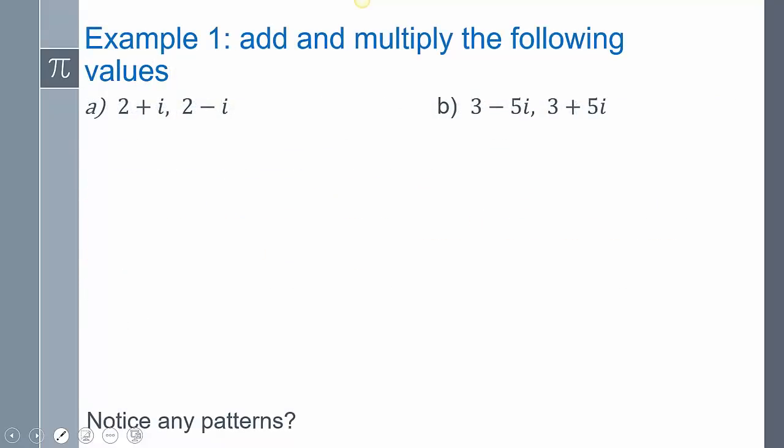Let's see if we can do this. Let's add these together. So 2 + i plus 2 - i. When we're adding these together, just combine like terms. 2 + 2 is 4. i - i, well that cancels out, so I just have 4.